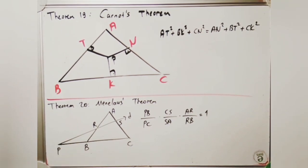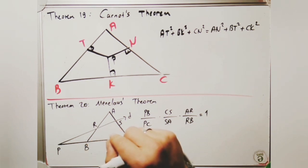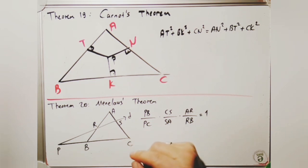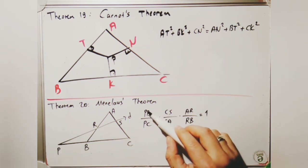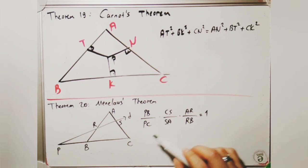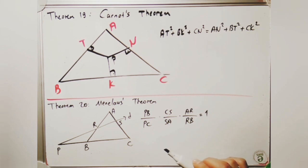The next theorem is Menelaus' theorem. In triangle ABC, if a line D intersects sides AB and AC, and the extension of the third side BC at points R, S, and P respectively, then: (PB/PC) × (CS/SA) × (AR/RB) = 1.